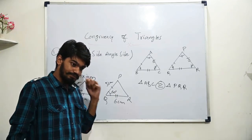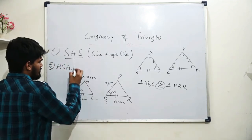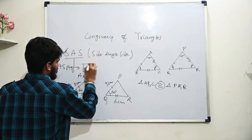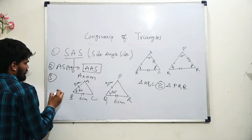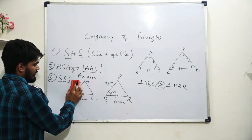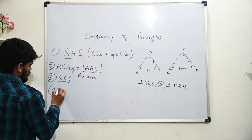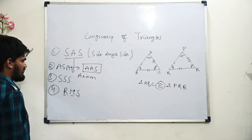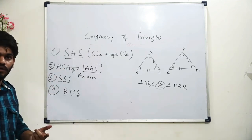We have other conditions as well. We have ASA — Angle Side Angle — and one more similar to ASA which we call AAS. Then we have SSS — Side Side Side — and one more: right angle, hypotenuse and one side, known as RHS. We can prove all these are conditions of congruency.